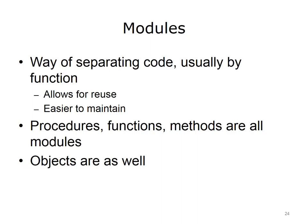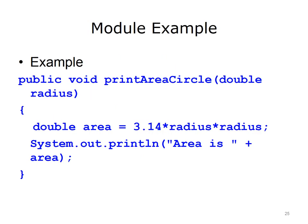The final construct of most programming languages is a way to separate code into modules. Depending on the language, modules may be called procedures, functions, or methods. The purpose of these modules is to perform some task. The task can be written once in a procedure and then reused. Dividing a program into separate modules provides a more organized structure to the code, making it easier to comprehend and maintain. Here is an example of a method in Java that calculates and prints the area of a circle. The radius of the circle is provided as an argument, and this method can be called multiple times with different values for the radius. Note that objects can also be considered modules and will be discussed further in the next lecture.